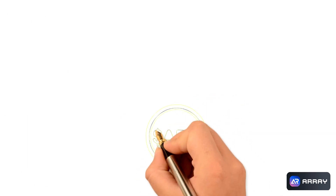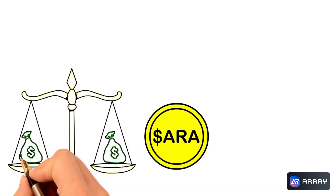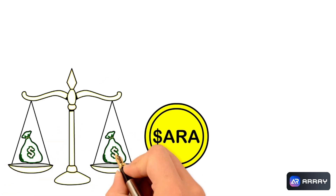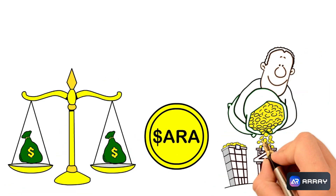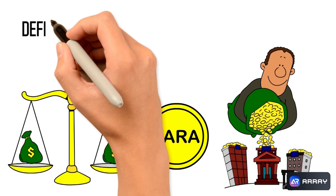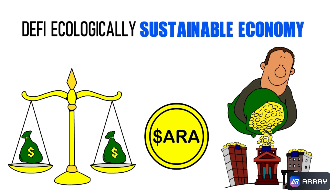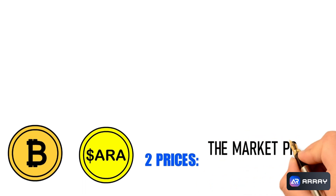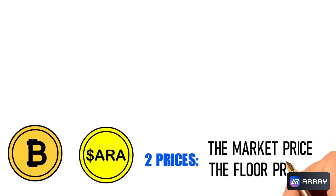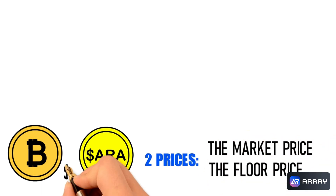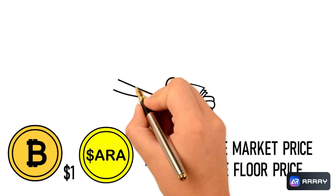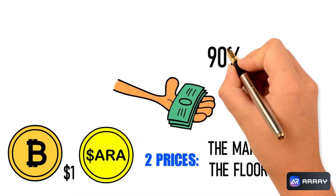Dollar ERA is a fully decentralized reserve currency with adaptive returns to balance venture capital, designed as a wealth storage method within the DeFi ecologically sustainable economy. Different from traditional tokens, Dollar ERA has two prices: market price and floor price. The initial price is one dollar, and the floor price is controlled by 90 percent of the assets deposited by the user.